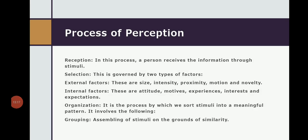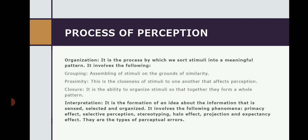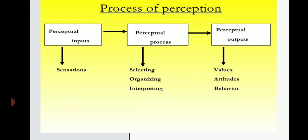In the perception process: Reception — a person receives information through stimuli. Selection — this is governed by two types of factors: external factors such as size, intensity, proximity, motion, and novelty; and internal factors such as attitude, motive, experience, and interest. Organization — it is the process by which we sort stimuli into a meaningful pattern, involving grouping. Interpretation — it is the formation of an idea about the information that is sensed, selected, and organized. It involves certain phenomena like selective perception, stereotyping, and halo effect. Perception is completed in three steps: perceptual input, process, and output.